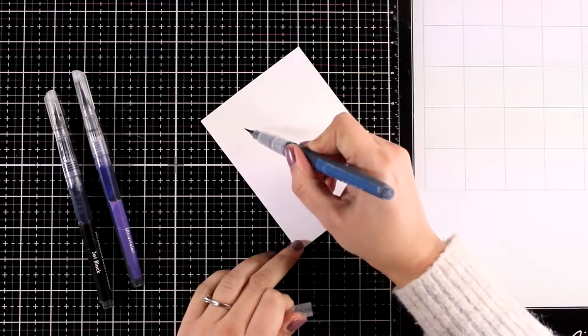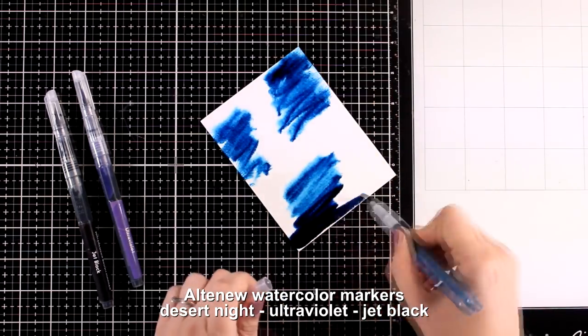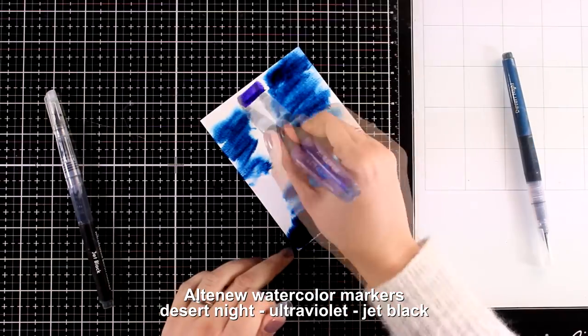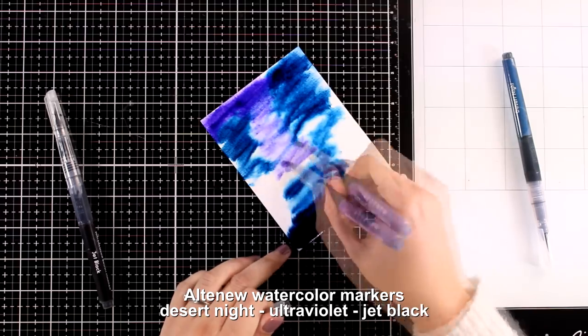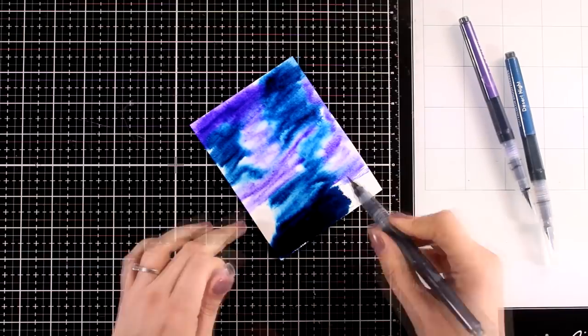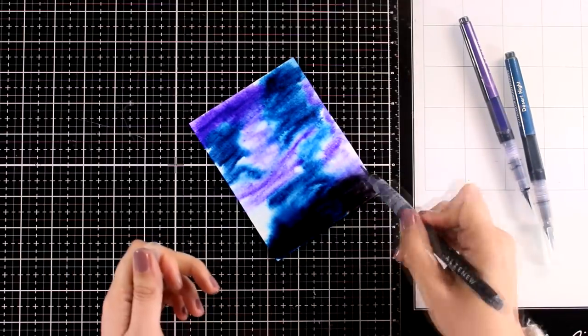So I always spray my surface with water first and then I'm going to go with the three markers - now I did choose a dark blue, a purple as well as a black. I am applying the three colors randomly on my background and then I'm going to help them blend by spraying some water on top as well.